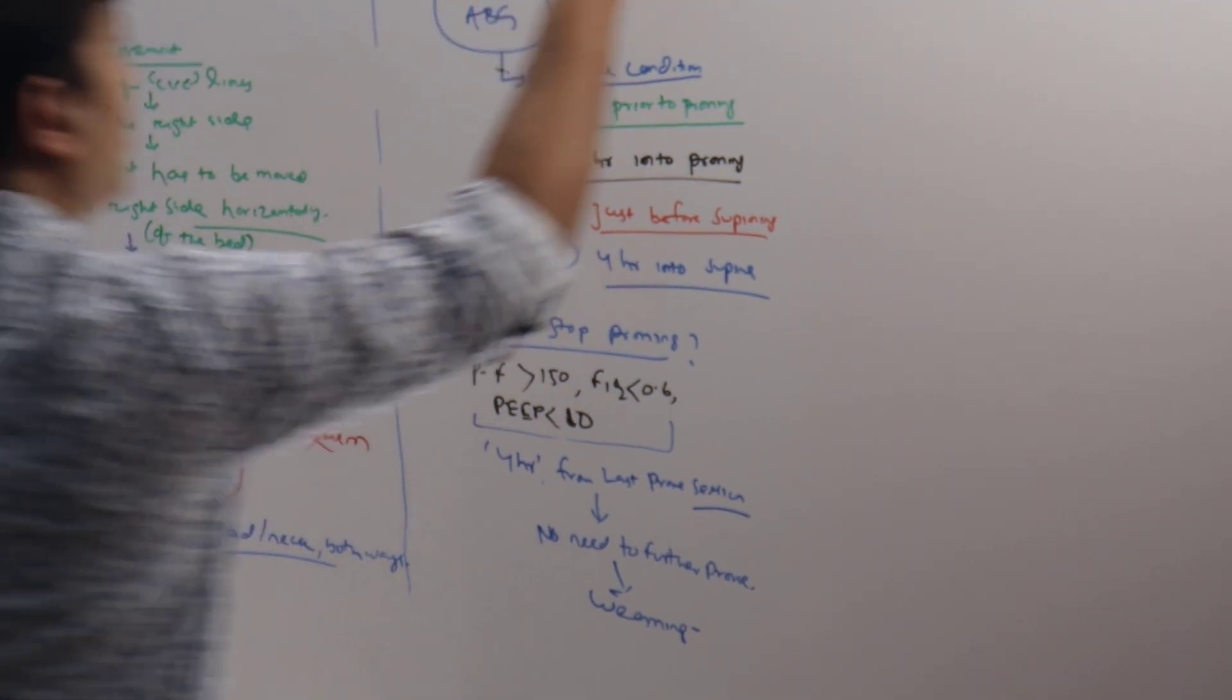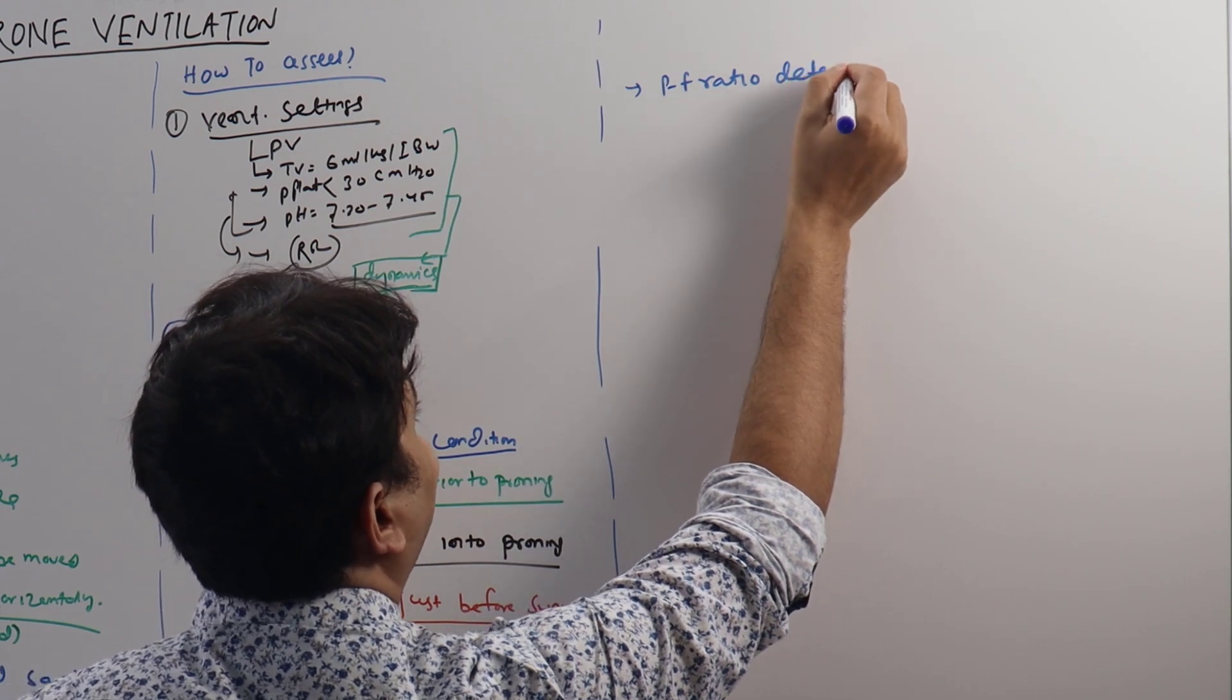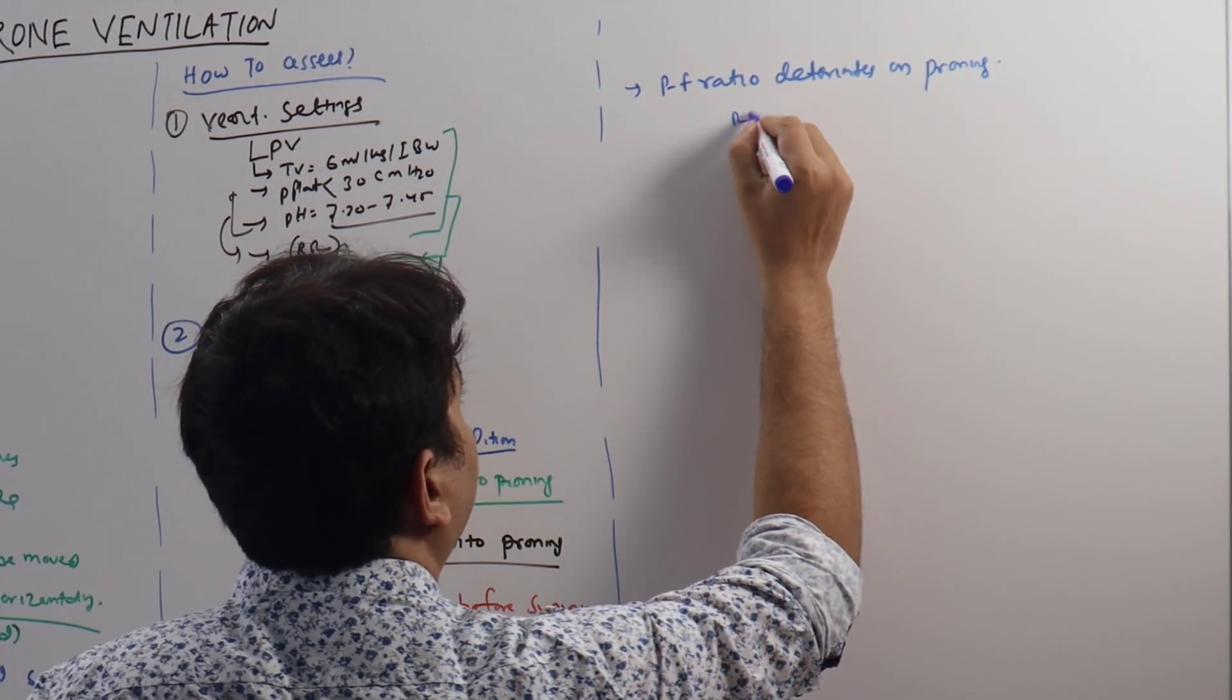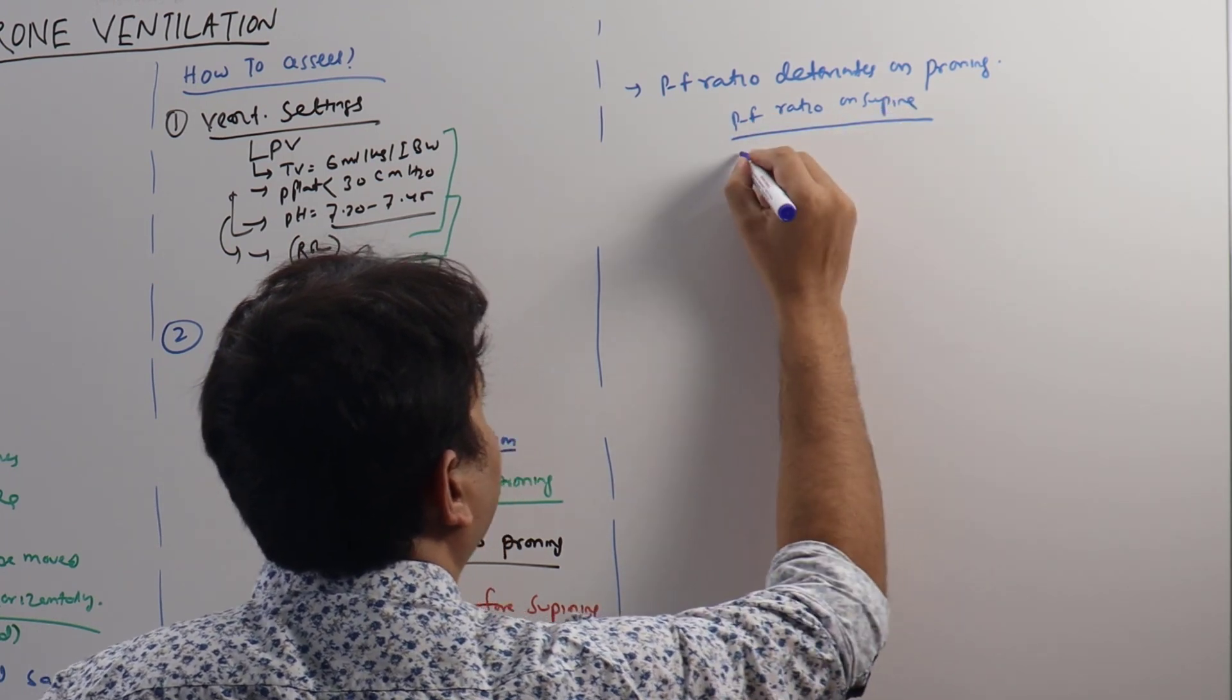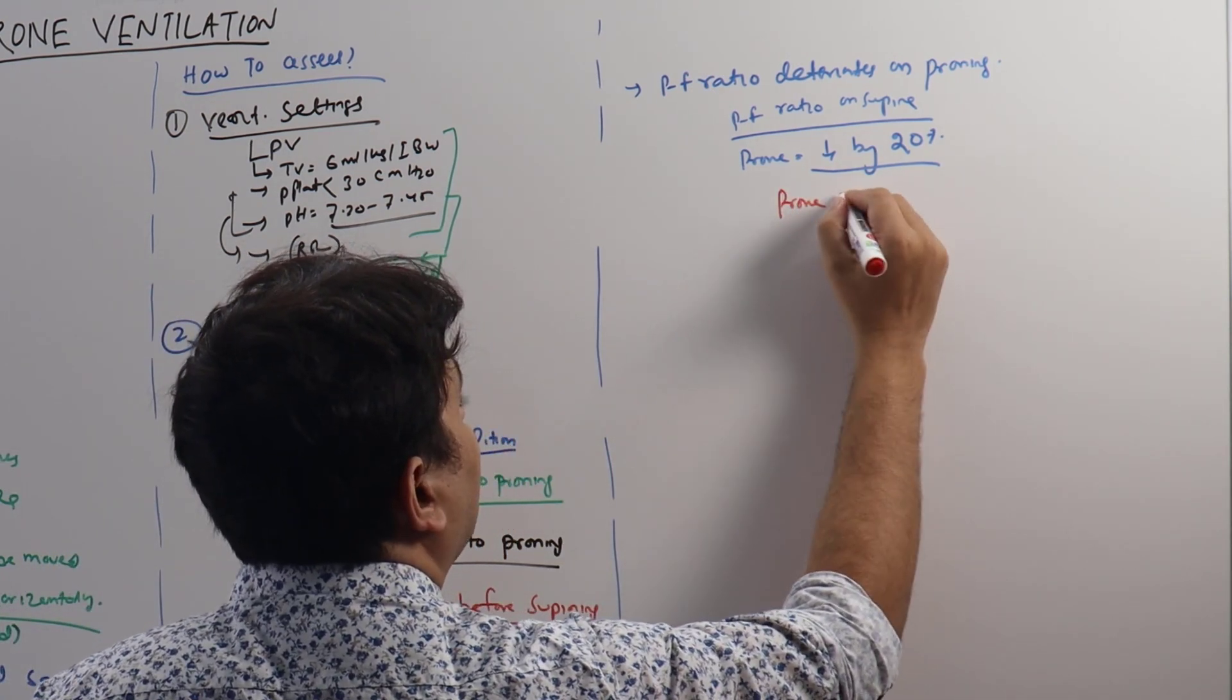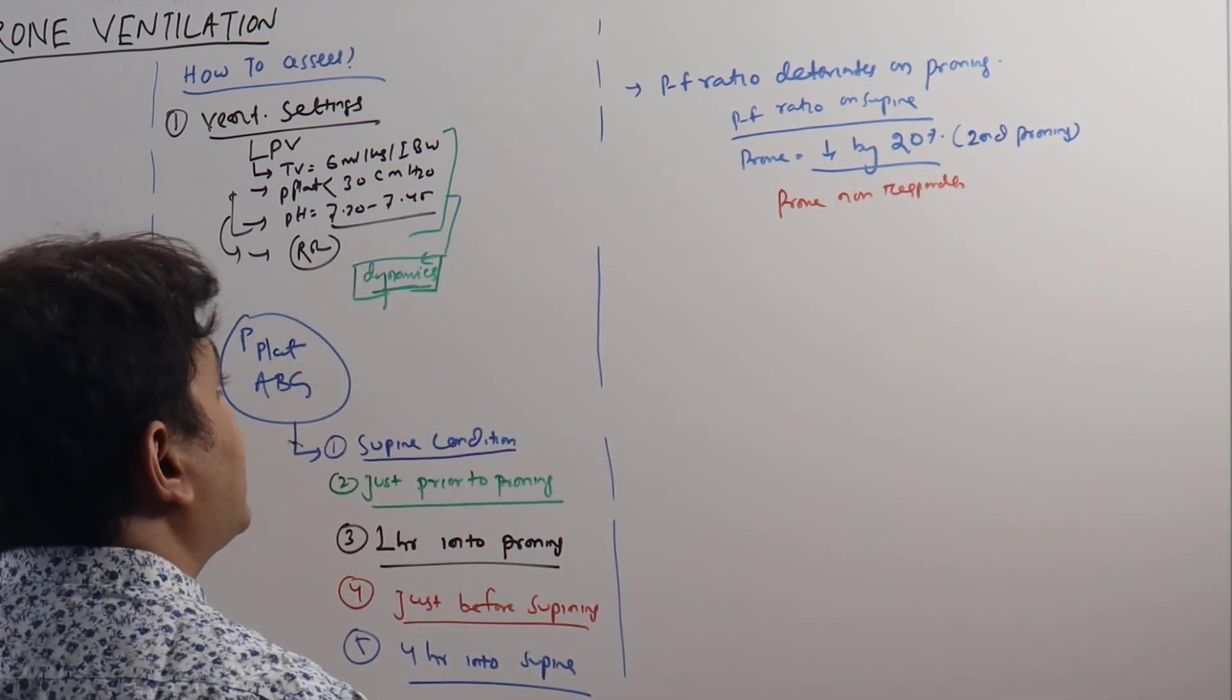What are the other situations when we have to start thinking about stopping proning? That is negative: when things are not going in a good direction. For example, when the PF ratio actually deteriorates on proning. The PF ratio on supine we have measured, and while person is on prone it decreases by 20 percent. That means this patient is a prone non-responder, and this is the second proning. So whatever the result, you have to give one 16 hours of proning.